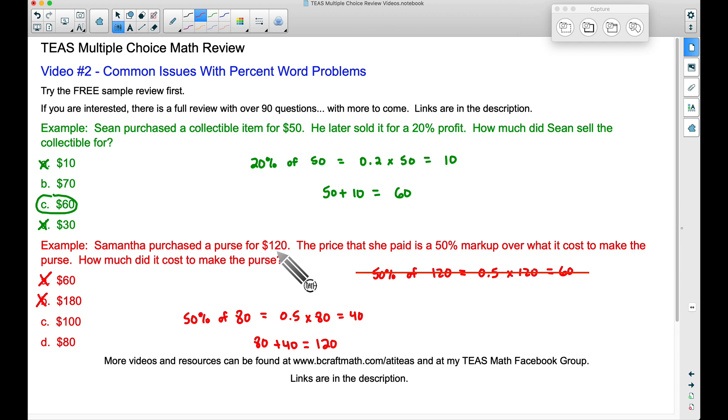Now if that confuses you, which it does confuse a lot of people, let me show this to you in an algebraic way. So let's suppose the cost to make this purse, I'm going to call it C. C is how much it costs to make the purse.